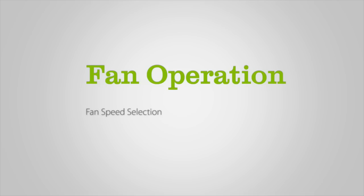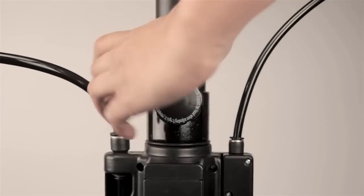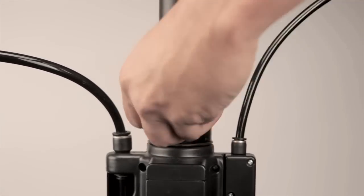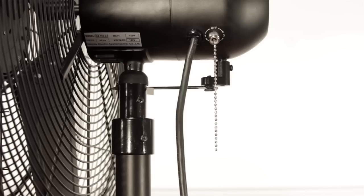Fan operation. You can adjust the height of your Brisa by loosening the pole lock knob and raising or lowering the fan assembly. Tighten the pole lock knob at your desired height. Select a fan speed by pulling the chain on the back of the Brisa motor head.